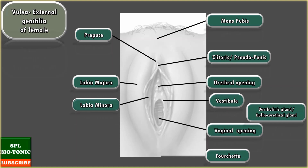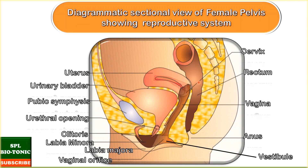This is a sectional view of the female reproductive system. Here we can see the uterus located above and behind the urinary bladder. The uterus leads to the cervix and vagina. The vulva shows labia majora, labia minora, and also encloses the vestibule with the urethral and vaginal openings. The anterior part of the vulva also shows the clitoris. In females, the urinary system is separate from the reproductive system. In the male system, the urethra is a common passage for urine as well as semen, which is why it is called the urinogenital system, whereas in females, both systems are separate.